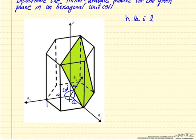They're each at 120 degrees to each other, but it's a convenient way to do it. And then the fourth, in the z direction, this distance from here to here is C.